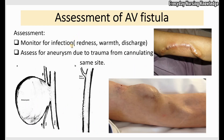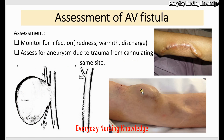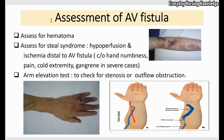Now let's see the assessment for AV fistula. You have to monitor for signs and symptoms of infection — that means any redness, warmth, swelling, or discharge. You have to assess for aneurysm, which is the outpouching of the blood vessels. This occurs because the walls of the blood vessels are weakened due to repeated cannulation at the same site. The skin over the aneurysm can become thin and the aneurysm can even rupture, causing severe bleeding — an emergency condition. You also have to assess for any hematoma, especially if the patient is on blood thinners.